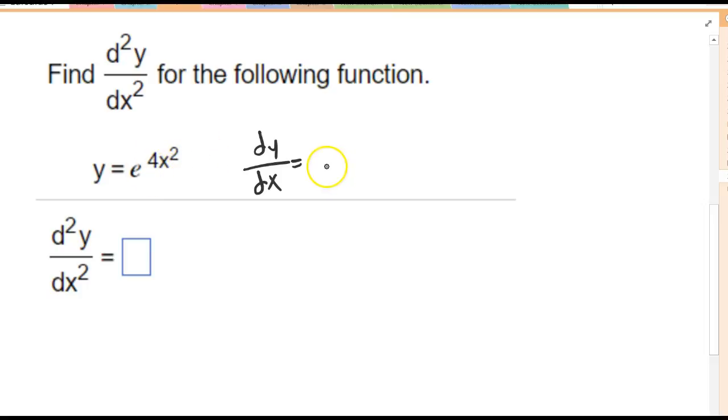This is the chain rule. So the derivative of the outside function evaluated at the inside times the derivative of the inside. So we end up with 8x e to the 4x squared.